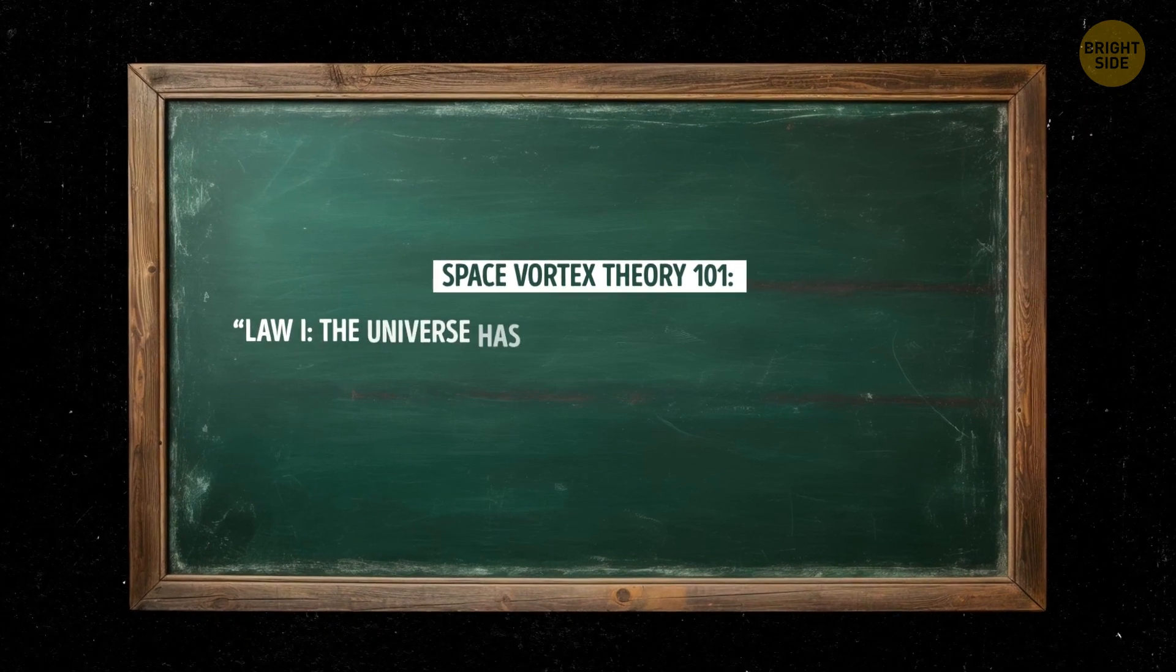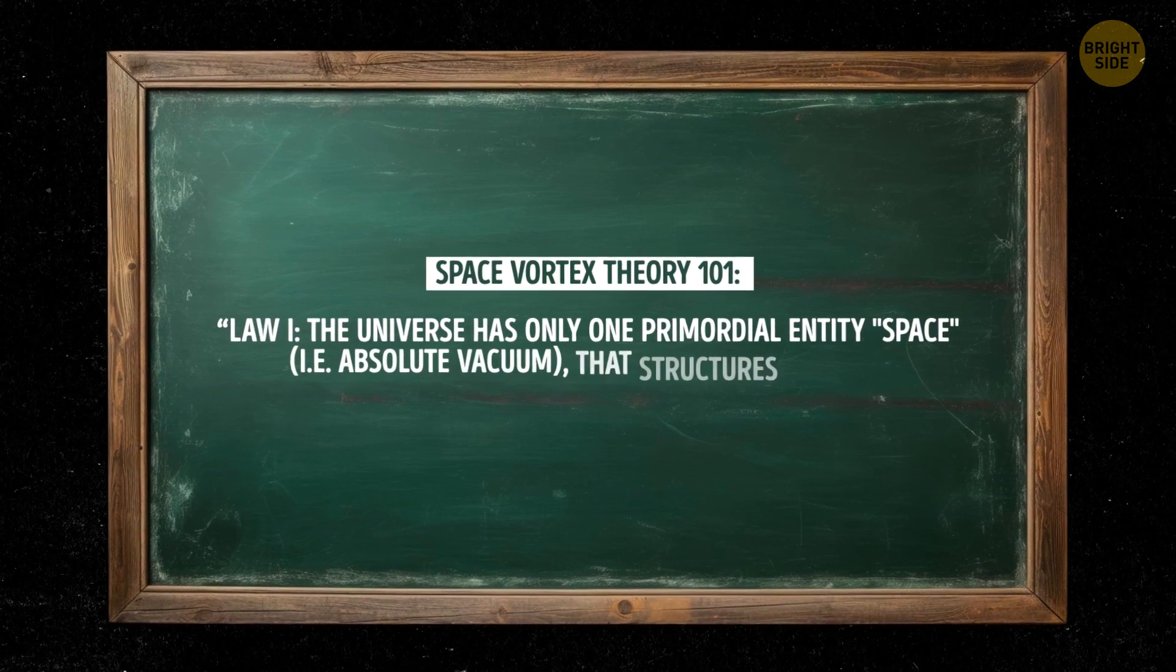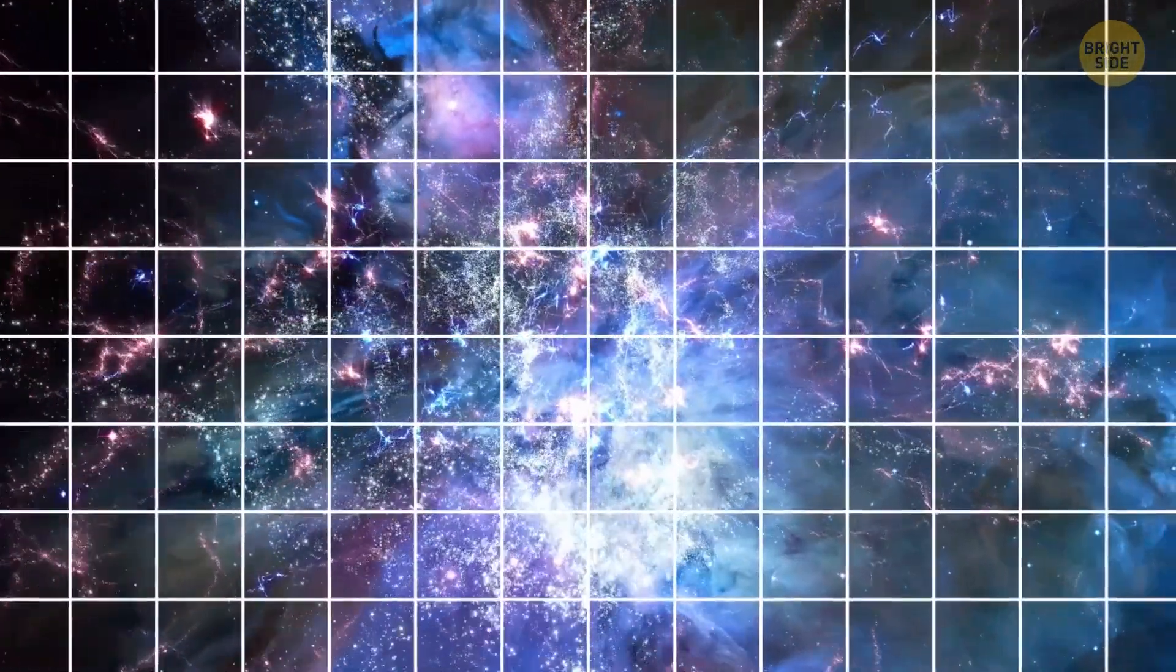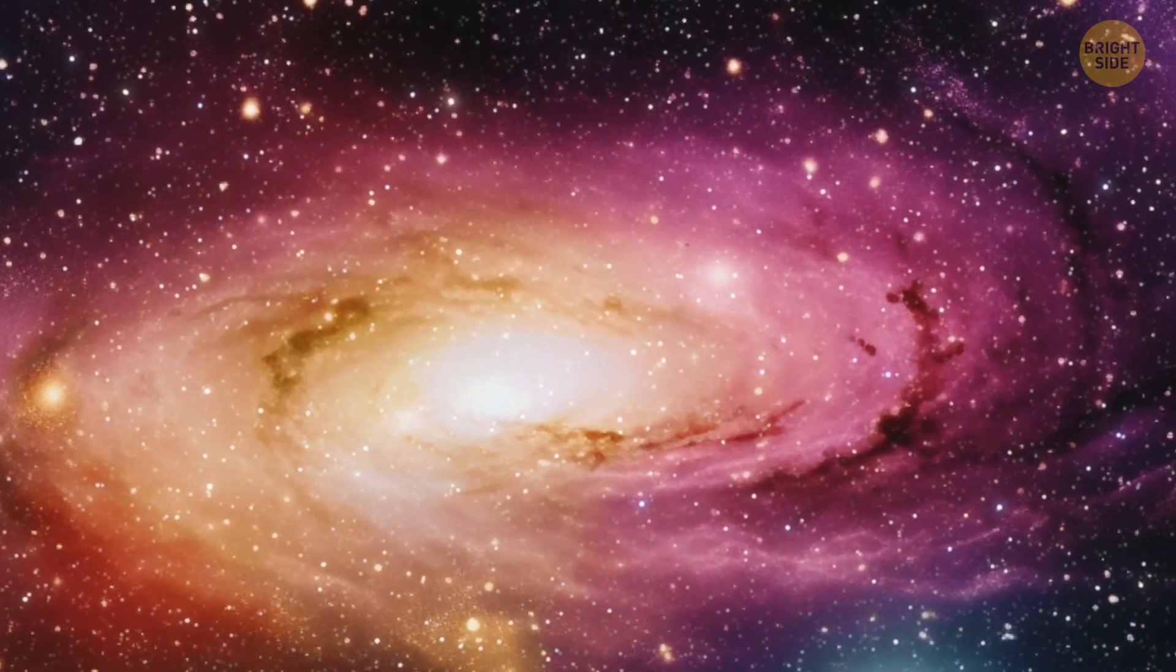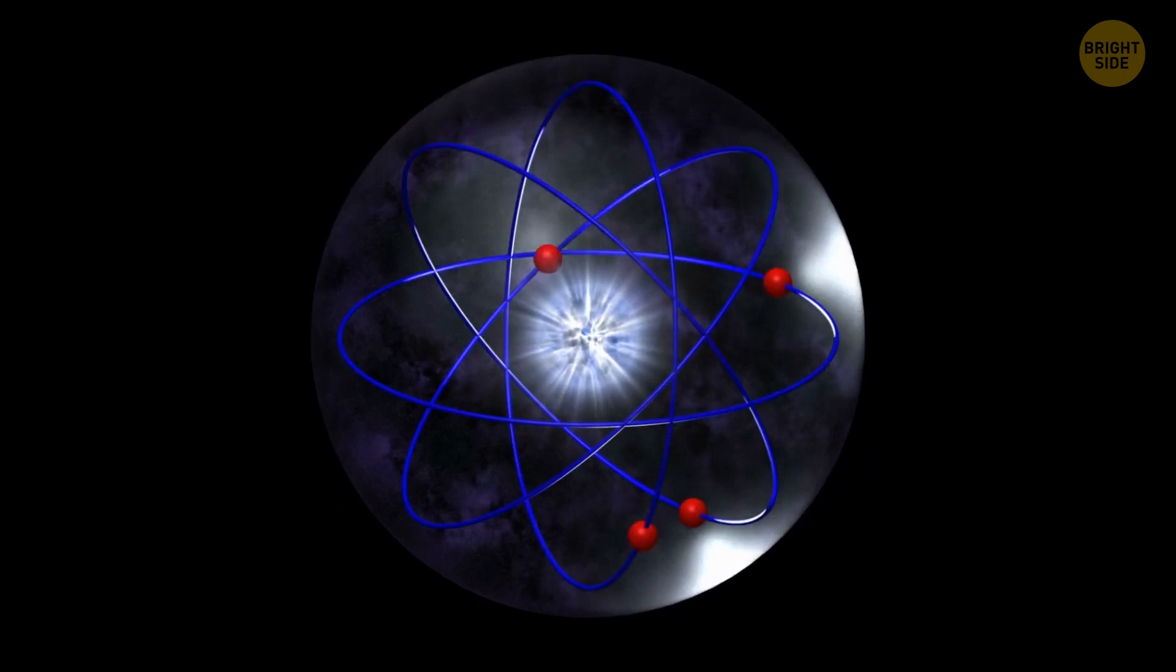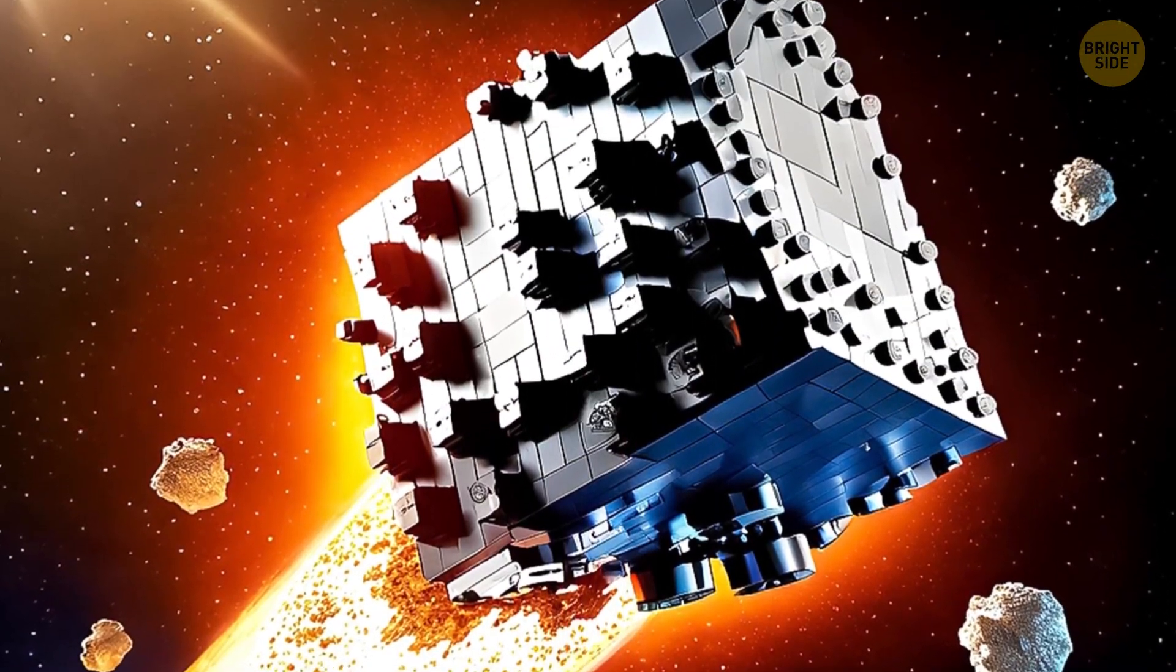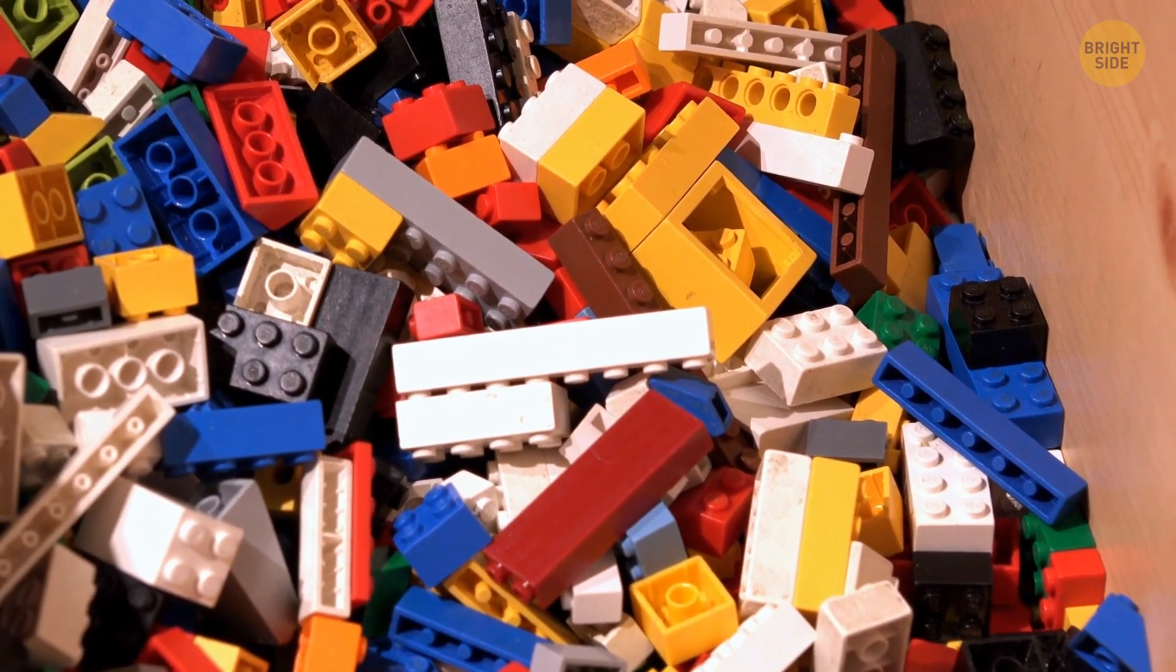Law 1: The universe has only one primordial entity - space, i.e. absolute vacuum, that structures matter. This law states that space is the fundamental building block of the universe and that it's responsible for structuring matter. It suggests that space is the fundamental entity that creates and maintains the structure of matter and that all matter in the universe is made up of the same fundamental particles like electrons and positrons. Let's try to put it in simple words. Imagine that the universe is like a big Lego set.